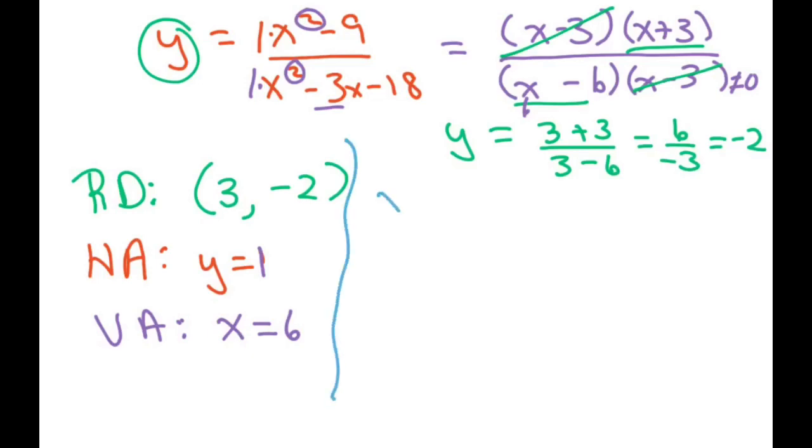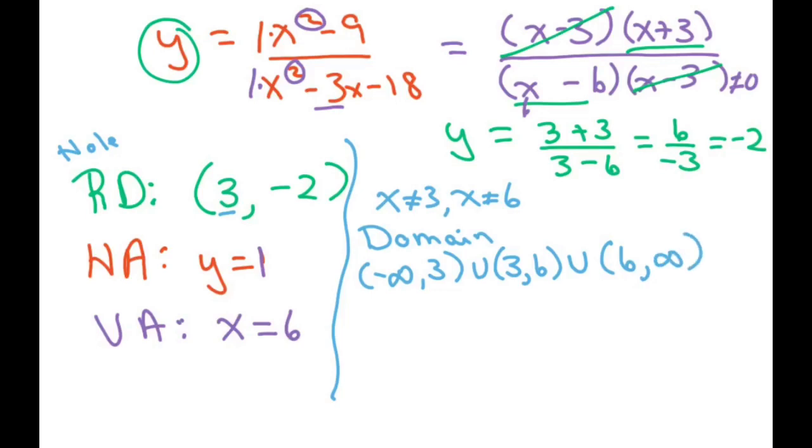We know that x cannot be 3 because that's a hole. These are holes in the graph. It cannot be 3, and x cannot be 6. So your domain, if you write in interval notation, it would be negative infinity to 3, or 3 comma 6, or 6 comma infinity.